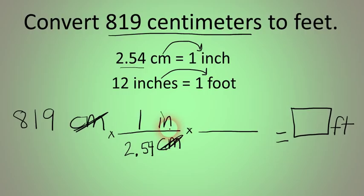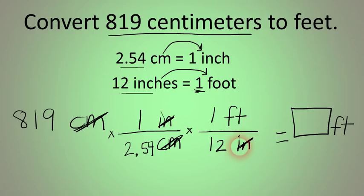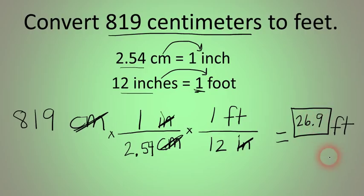Now we're in inches, but we want feet. So we do a second conversion factor: inches goes on the bottom, feet goes on top. 1 goes next to feet and 12 goes next to inches. We cancel inches top and bottom. Now we just do the arithmetic: on your calculator type 819 divided by 2.54 divided by 12. Anytime there is a number in the denominator, we divide by that number. The answer is very close to 26.9, so 819 centimeters is the equivalent of 26.9 feet.